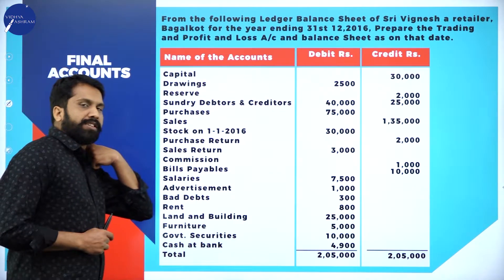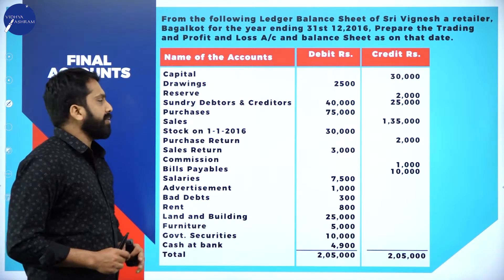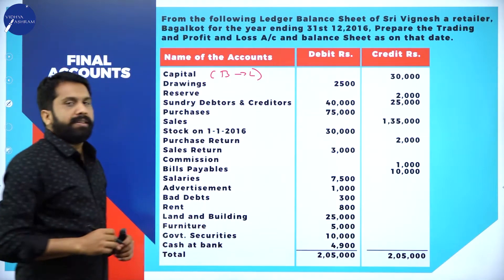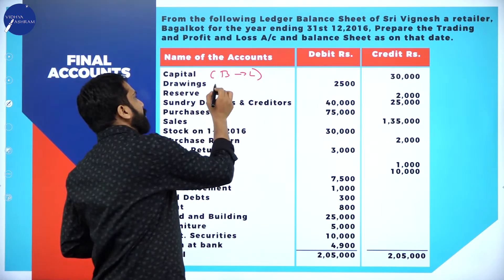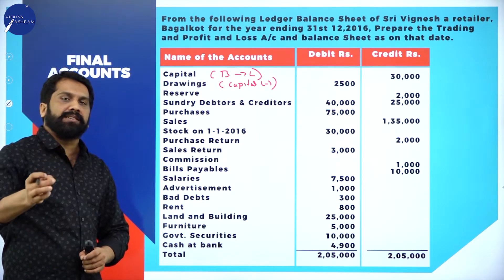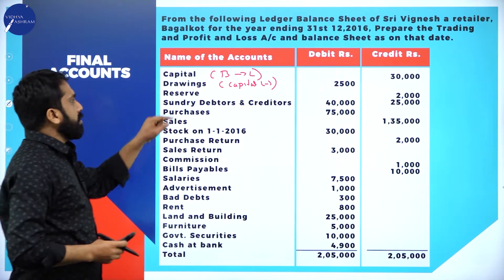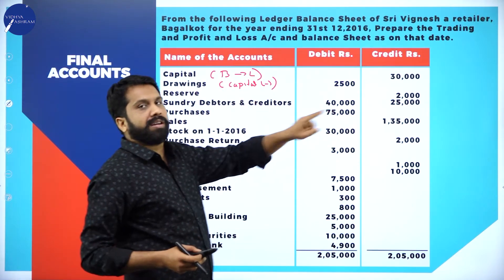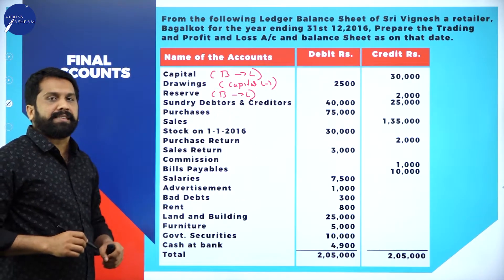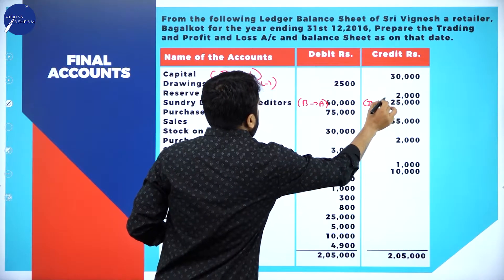First, we have to mention whether each item comes under balance sheet, trading account, or profit and loss account. Capital comes under balance sheet liability. Drawings should be deducted from capital - you can write it as capital minus. Reserve - we call it as general reserve, capital reserve, or some specific reserve - reserves always come under liability. The reserve amount is credit side, meaning it is a liability item. Debtors will come under balance sheet asset. Creditors come under balance sheet liability.